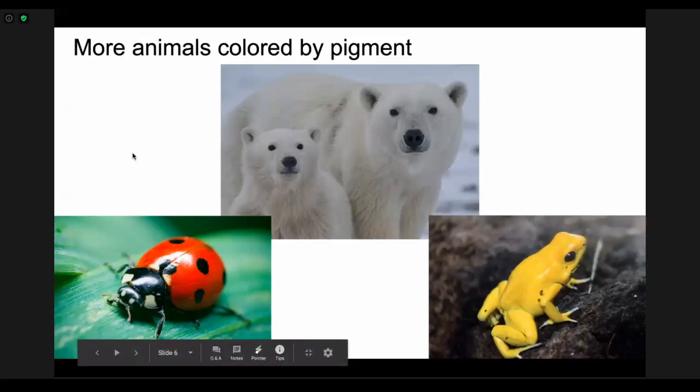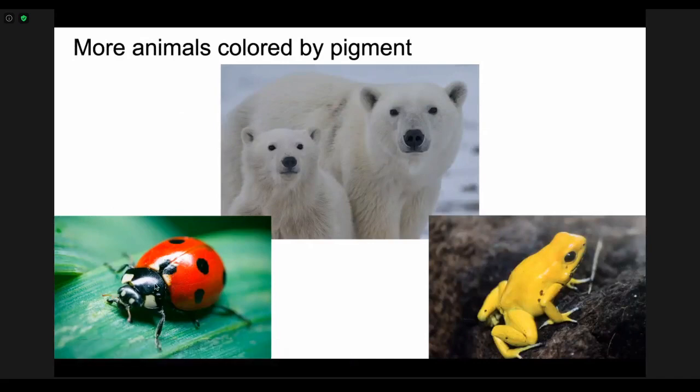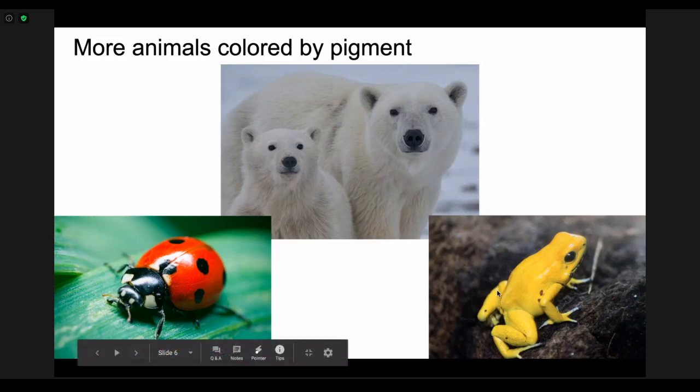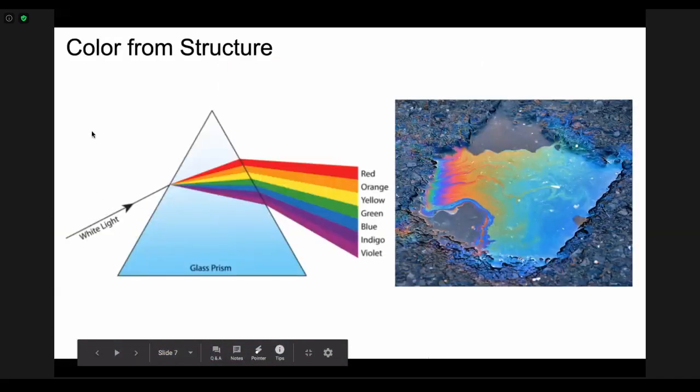Some other animals that are colored by pigment: on this ladybug, the black parts actually would absorb all light. The white parts of this polar bear reflect all of the light back to you so they look white. And then this frog reflects yellow light but absorbs all of the other colors.